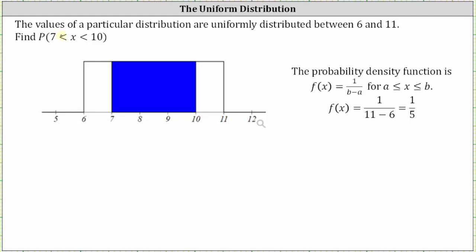So looking at the graph, notice how the probability density function is this horizontal line here, which again indicates we have a uniform distribution.